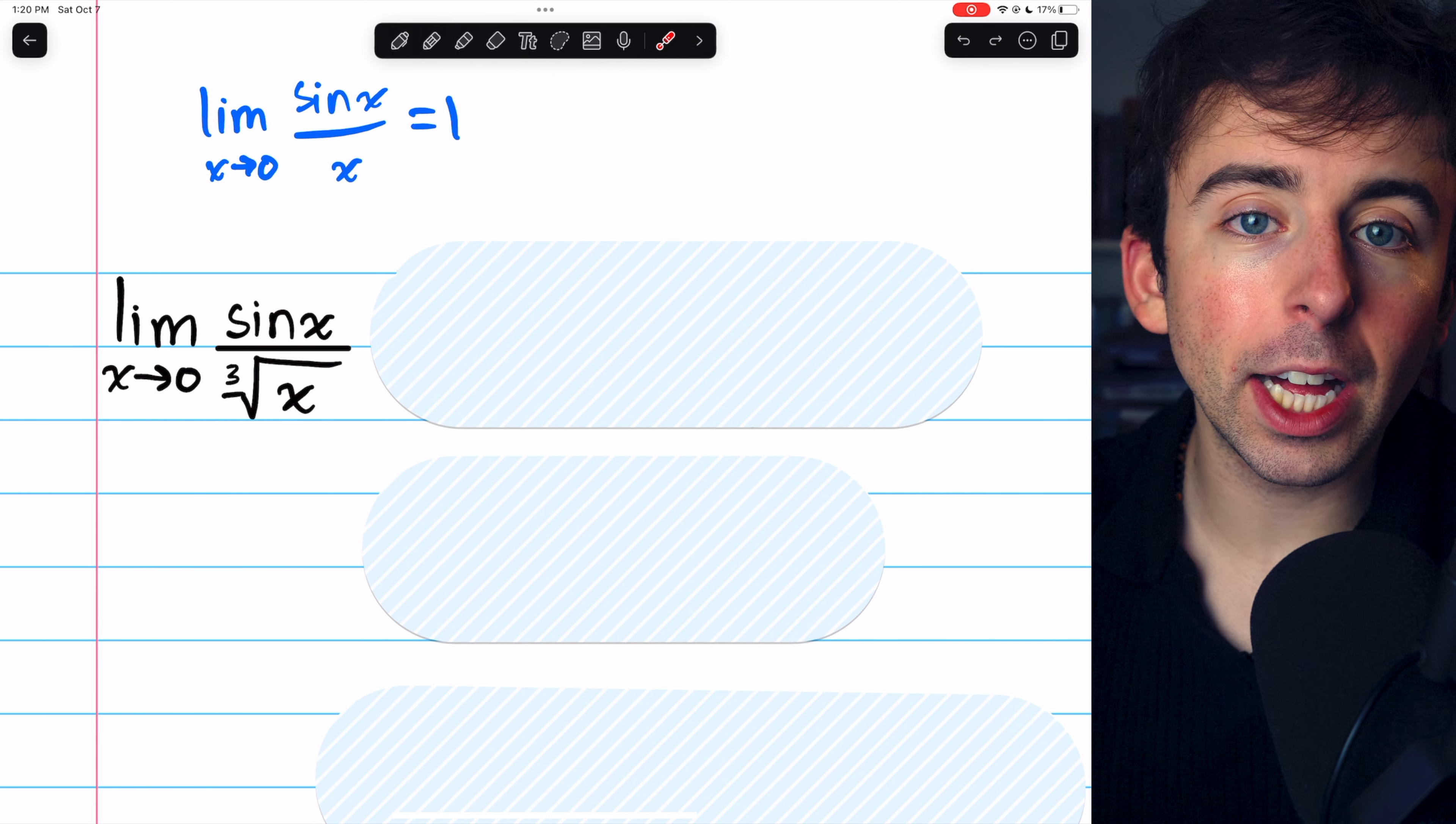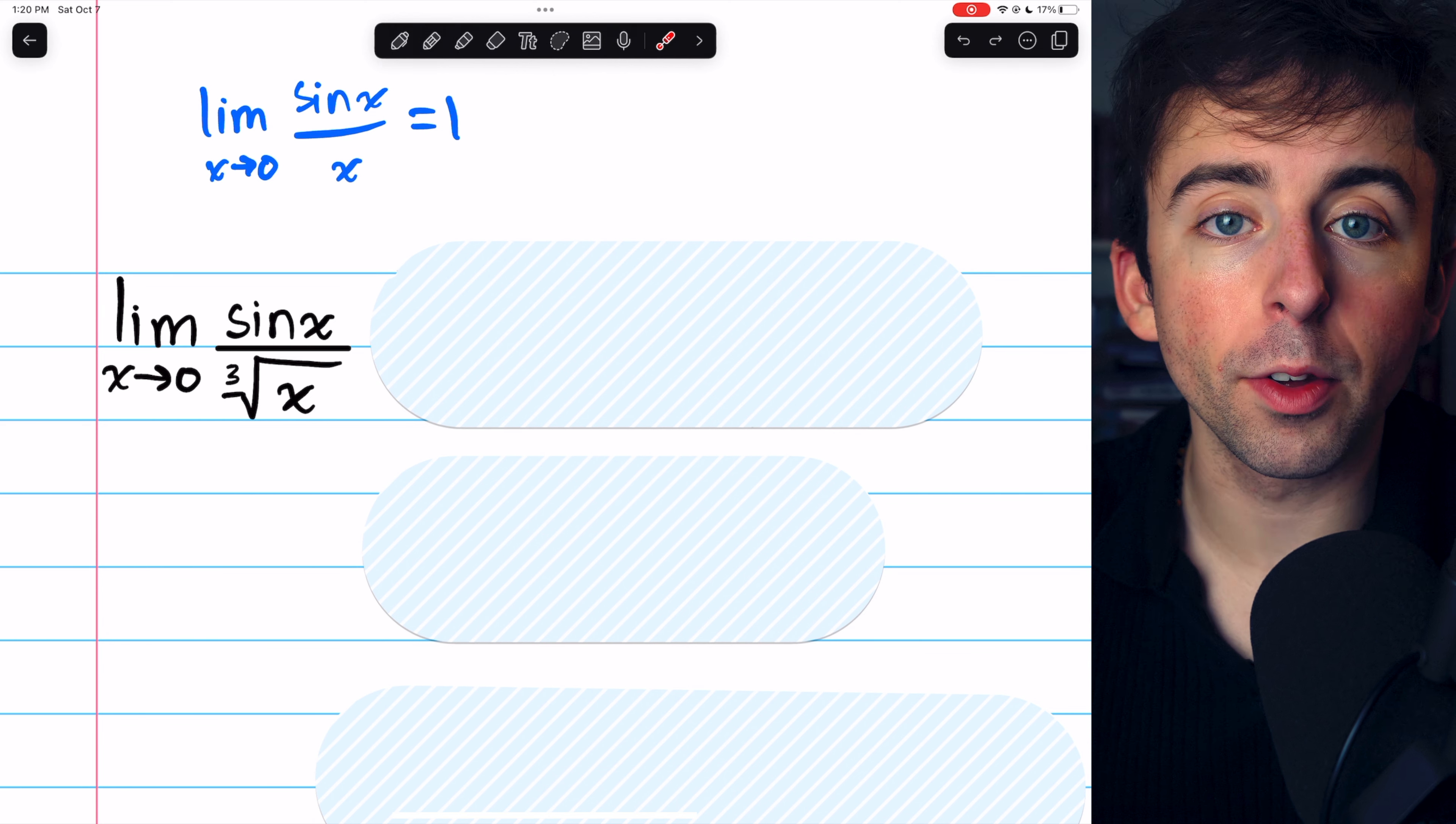With this fact, we can evaluate all sorts of other trig limits, including this one, the limit of sine x over the cube root of x as x approaches 0.